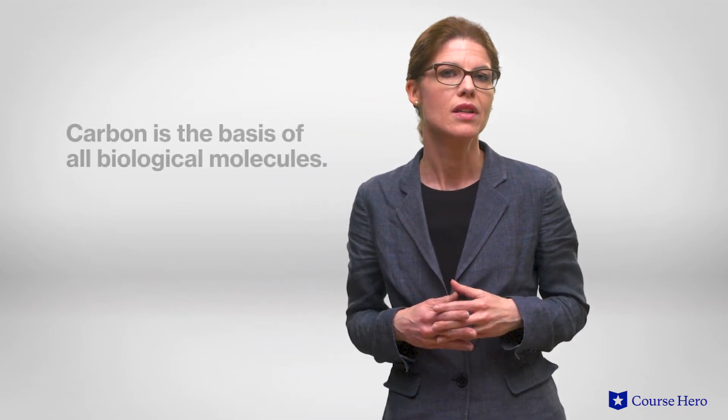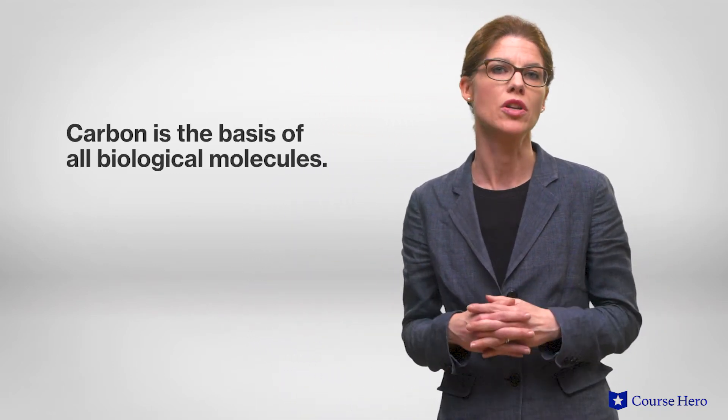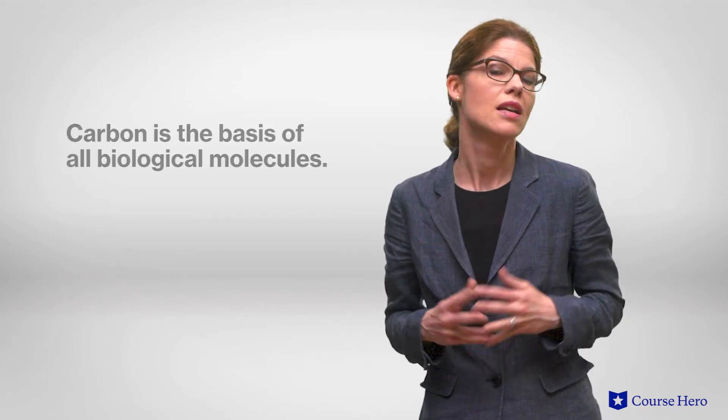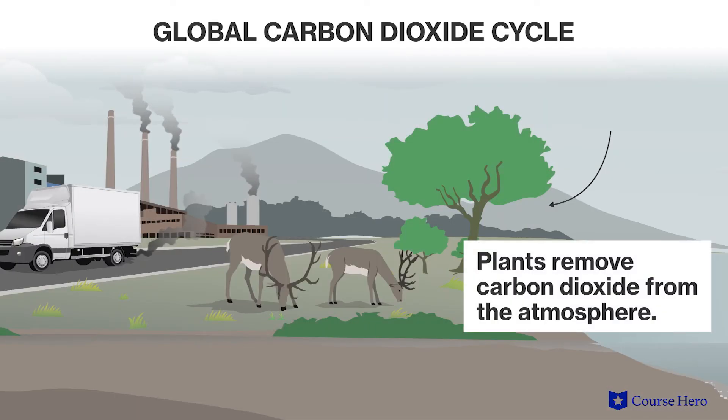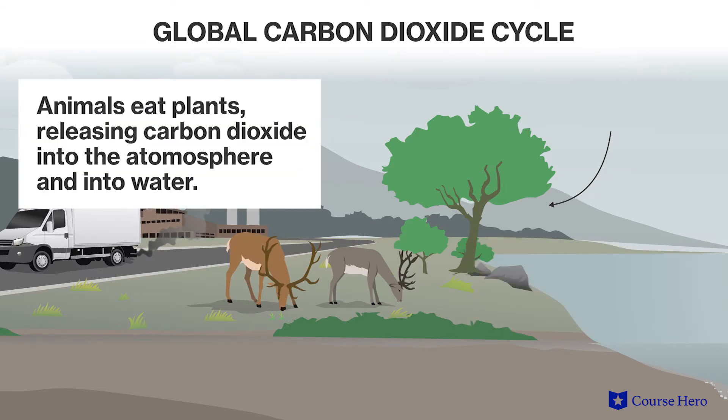The last biogeochemical cycle we will look at is the carbon cycle. Carbon forms the basis of all biological molecules and so it's essential for life. Carbon is found in its gaseous form as atmospheric carbon dioxide, as well as in fossil fuels and dissolved in ocean waters. Plants take up carbon dioxide and convert it into organic carbon through photosynthesis. Consumers then eat plants and the organic carbon molecules are broken down by cellular respiration, releasing carbon dioxide back into the atmosphere. Carbon is also stored in living organisms because the main biomolecules that make up organisms are carbon-based.